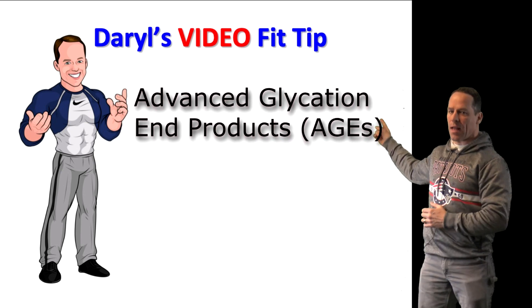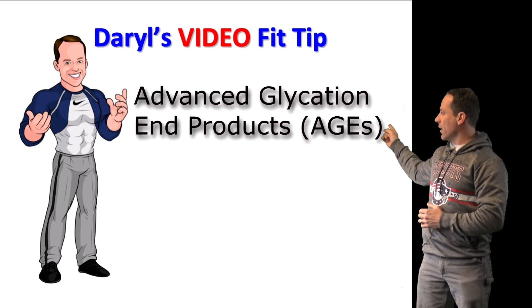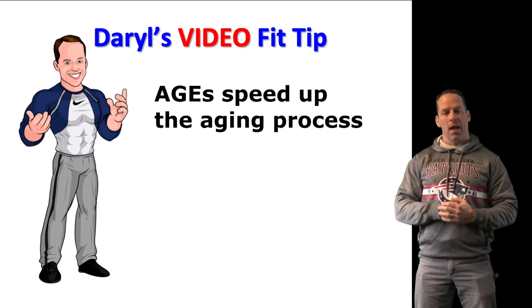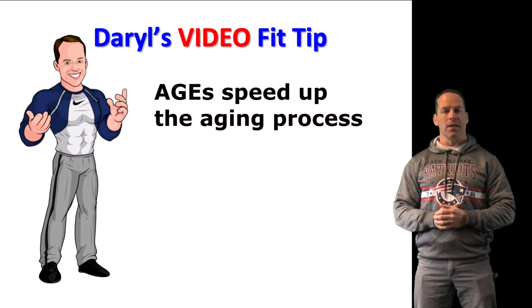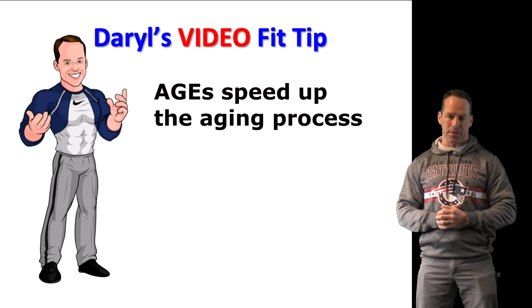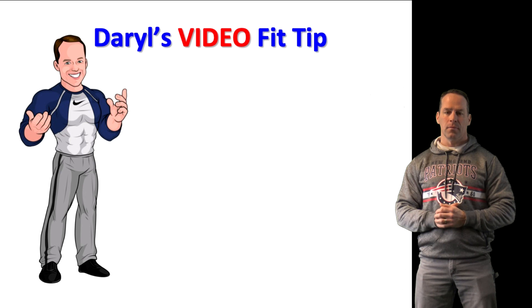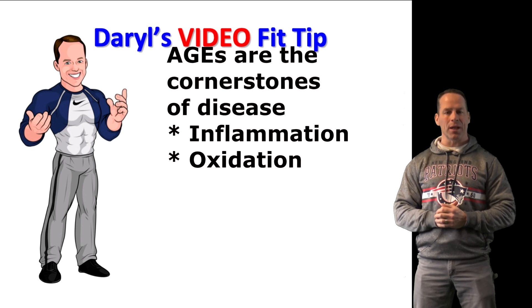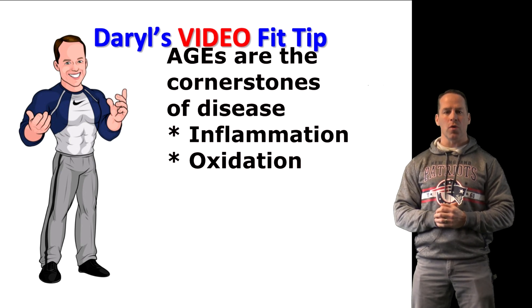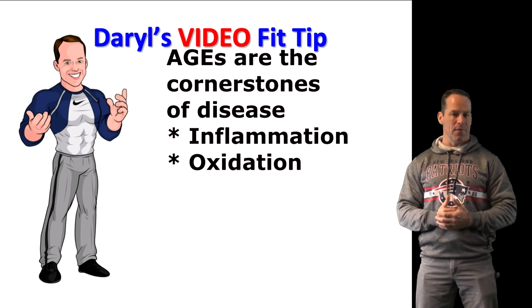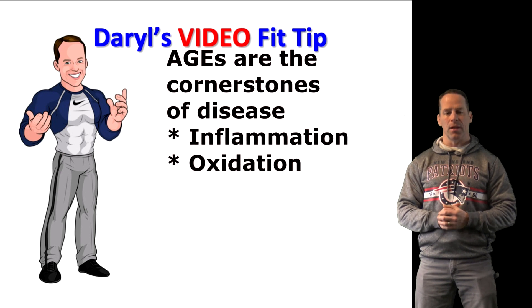Advanced glycation end products — AGEs — as their name implies, speed up the aging process. But that's not all. These compounds are also directly linked to the cornerstones of chronic disease: inflammation and oxidation.